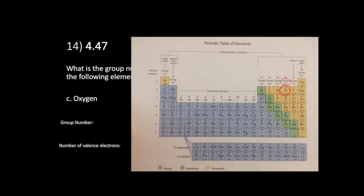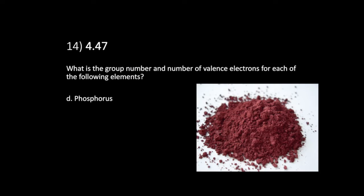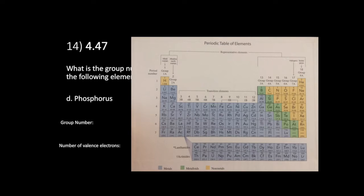How about oxygen? This is solid oxygen in the photo. Oxygen is at the top right, and you can see it's in group 6A, so the group number is 6A. An oxygen atom has six valence electrons — the same number as the group A number — and those valence electrons determine whether oxygen can stick to other stuff.